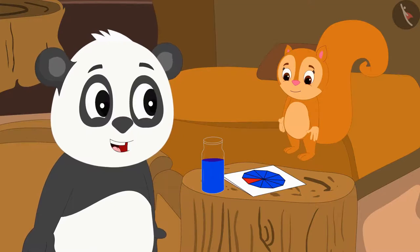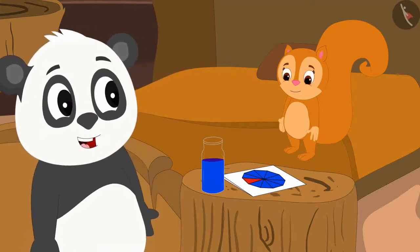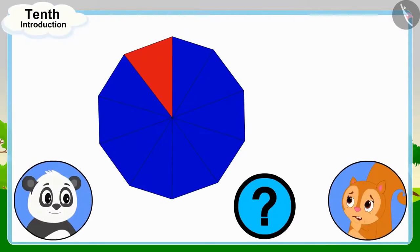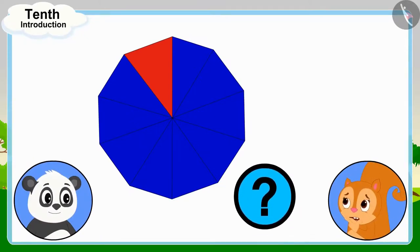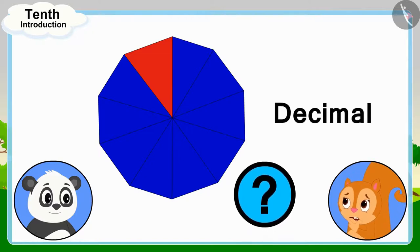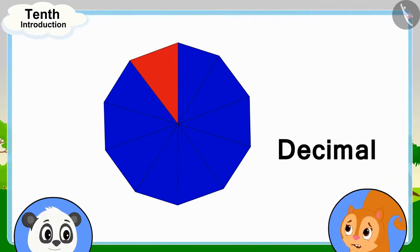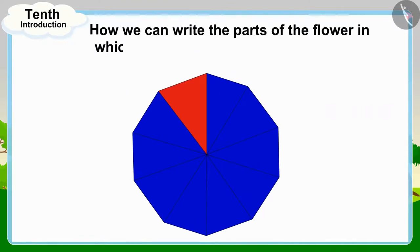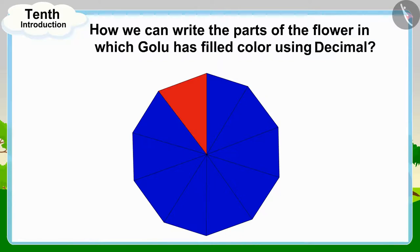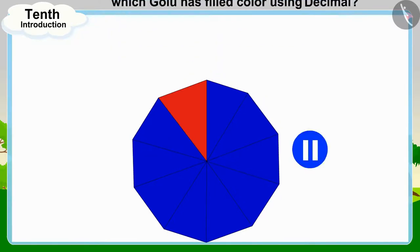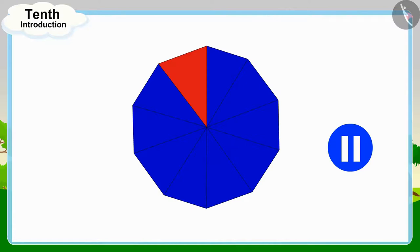Chanda, I have colored the remaining nine parts. Chanda is wondering how she can write the parts of the flower filled by Golu using decimal. Can you tell how we can write the parts of the flower in which Golu has filled color using decimal? If you wish to, you may stop the video and think about the answer.